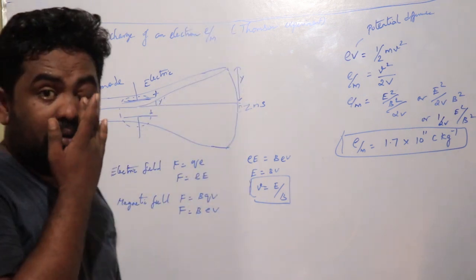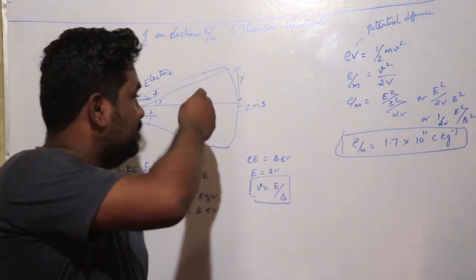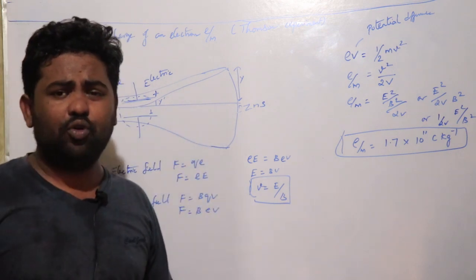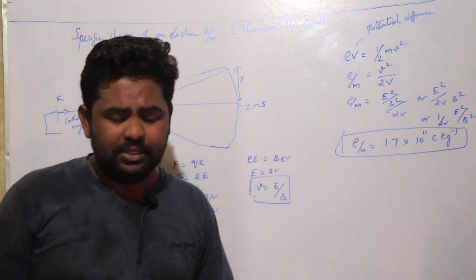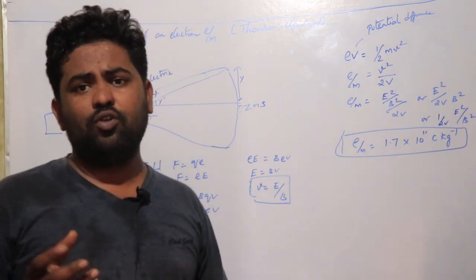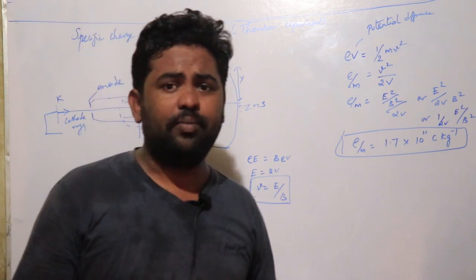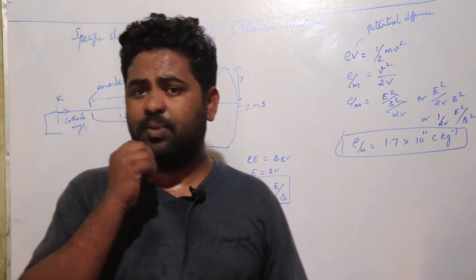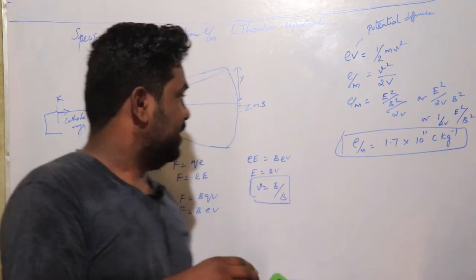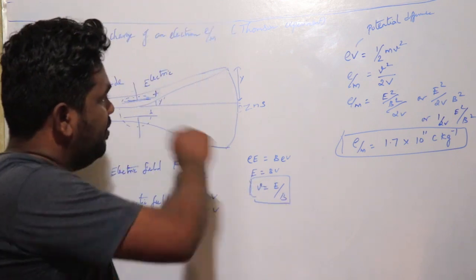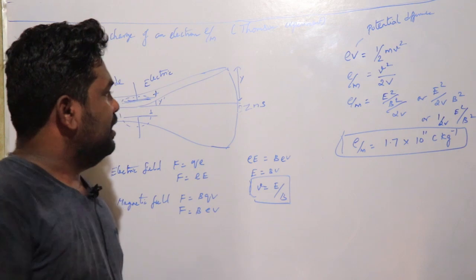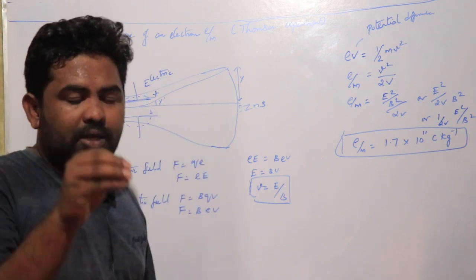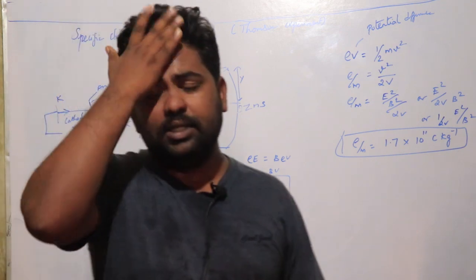There is a screen coated with Zinc Sulfide, which is a fluorescent material. The cathode rays are invisible, but when they hit the Zinc Sulfide screen, they produce a scintillation — a flash of light.